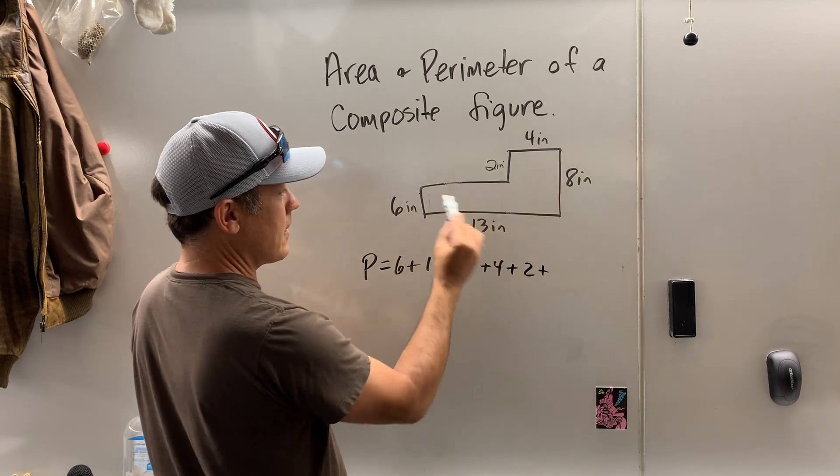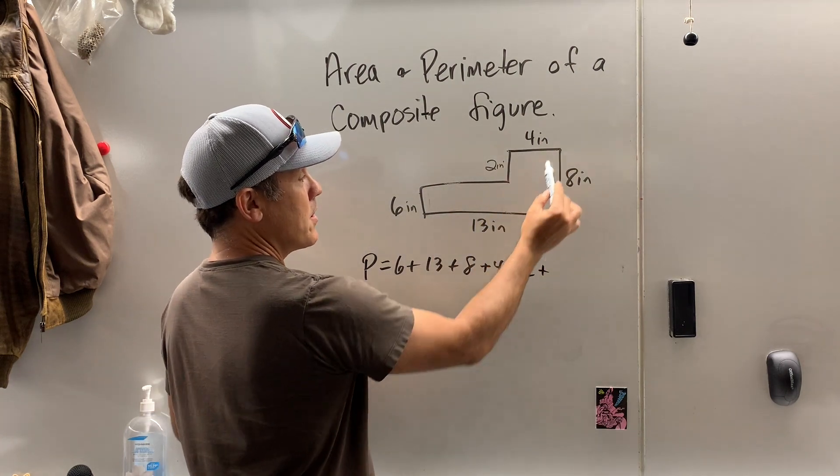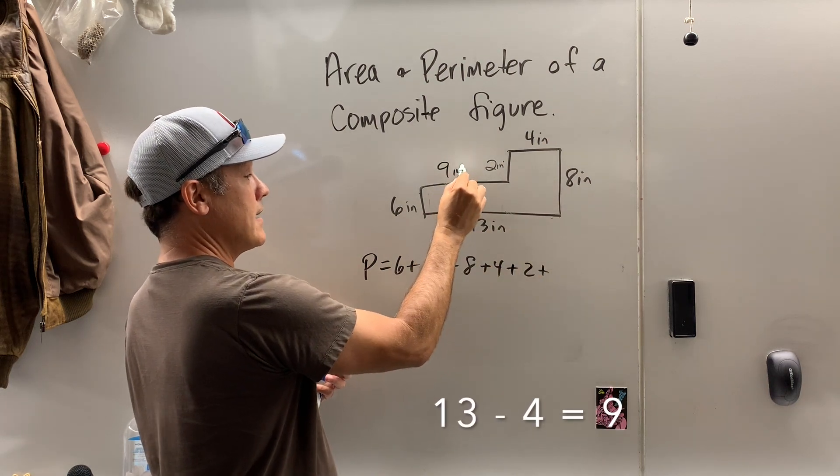Then we've got to add this little guy here. Well, all the way is 13. This much is 4. So what's left over?